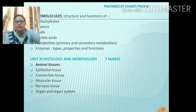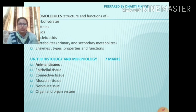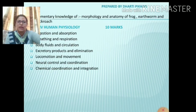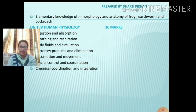Next we have the third unit, that is histology and morphology — this unit carries 7 marks. Histology means the study of tissues, and morphology means the study of appearance. In histology we will study animal tissues: epithelial tissue, connective tissue, muscular tissue, nervous tissue, and organ and organ systems. Also in this unit we have elementary knowledge of morphology and anatomy of frog, earthworm, and cockroach — so morphology as well as anatomy of these three organisms we have to do.